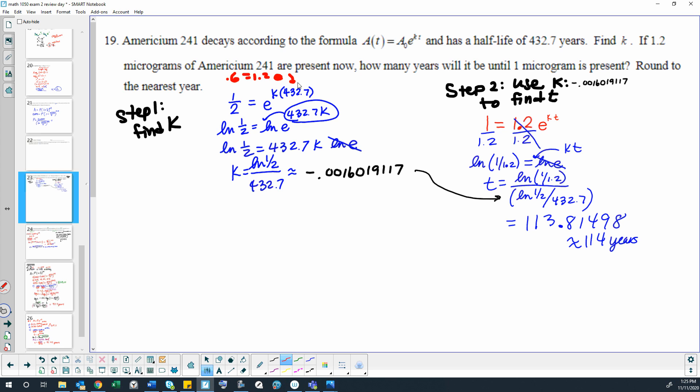So we have half equals e to the kt with our half-life for t. We take the natural log of both sides. We use our power property to move our 432.7k to the front, and then it's 432.7 times k times natural log e, but the natural log of e is 1. So multiplying by that 1 doesn't change this value. So final answer when we solve for k and we divide by 432.7 is the natural log of 1 half divided by 432.7, which gives us an approximate k value of negative 0.0016019117.